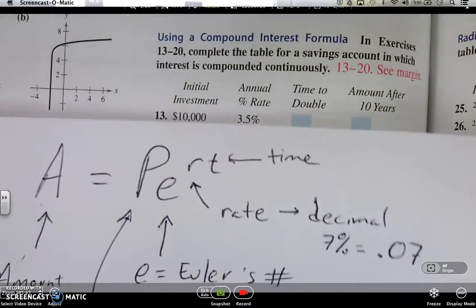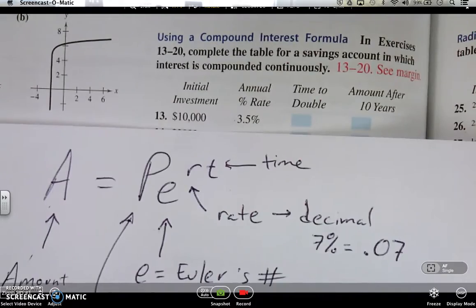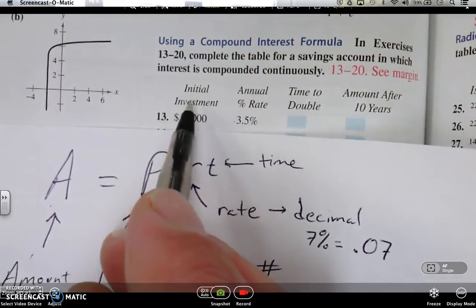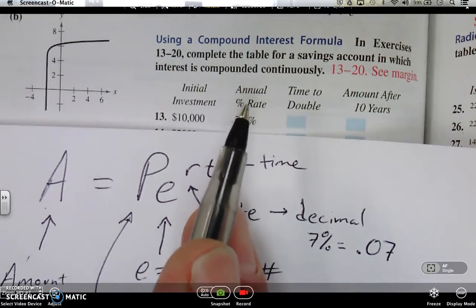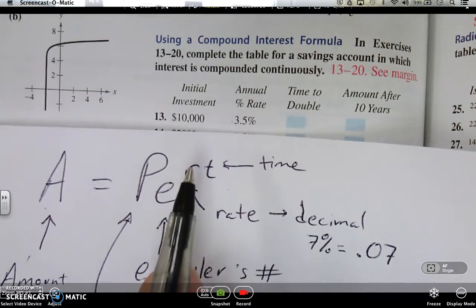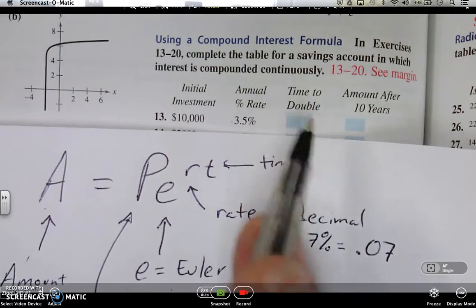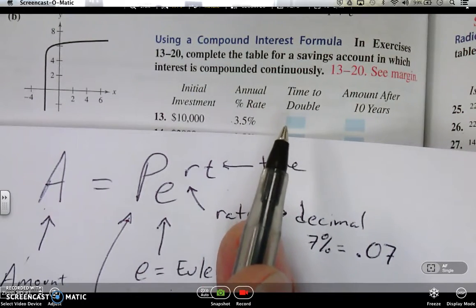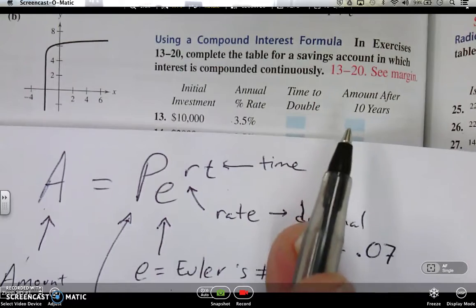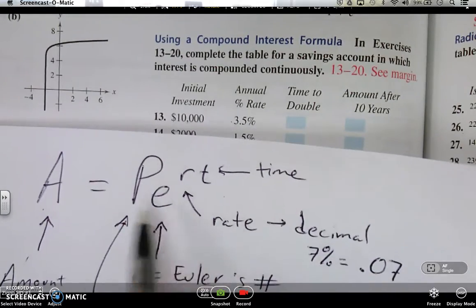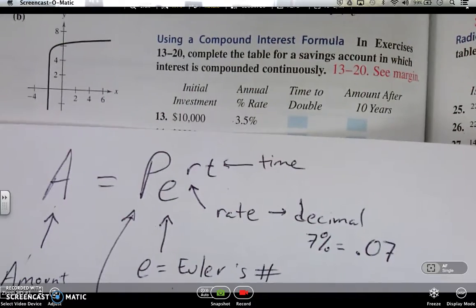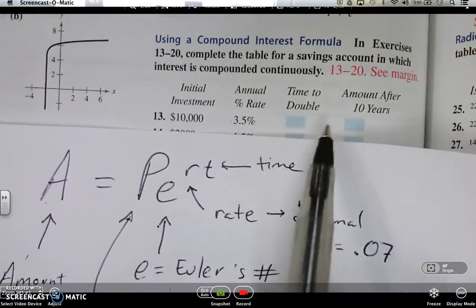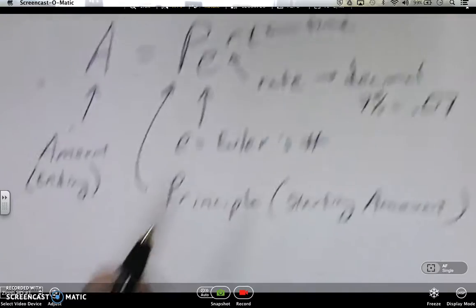So now that we know all that, that helps a whole bunch. Each one of those things is a part of the equation. So if you go back down to this one, $10,000 initial investment. So that's our starting amount. That's our principal. Percent rate. Well, there it is. That's going to go in for R. Time to double. We don't have that. An amount after 10 years, we don't have that either. But we have most of the variables we need, and we're going to be able to find the amount. So let's go through this. There's two parts. There's two things we need, and we're going to have to do both parts.